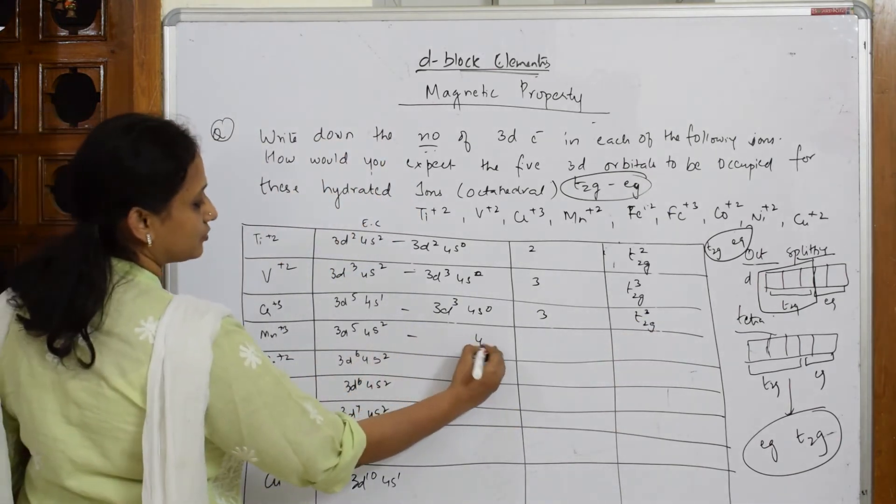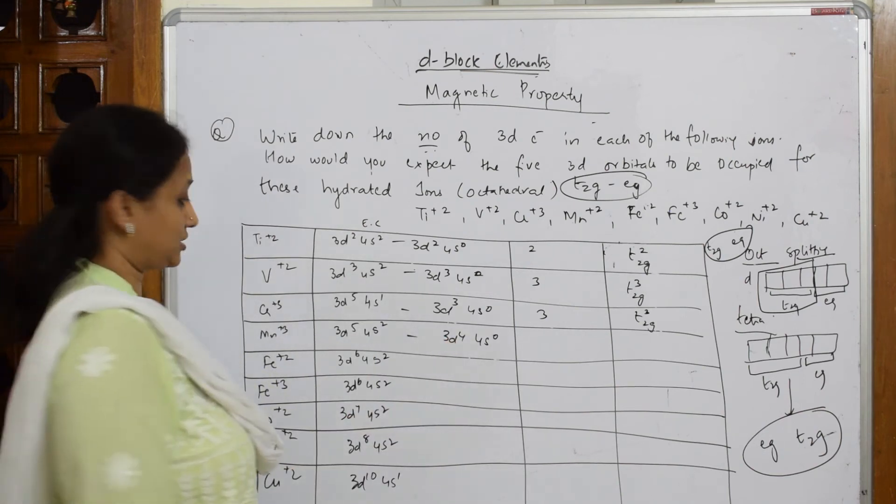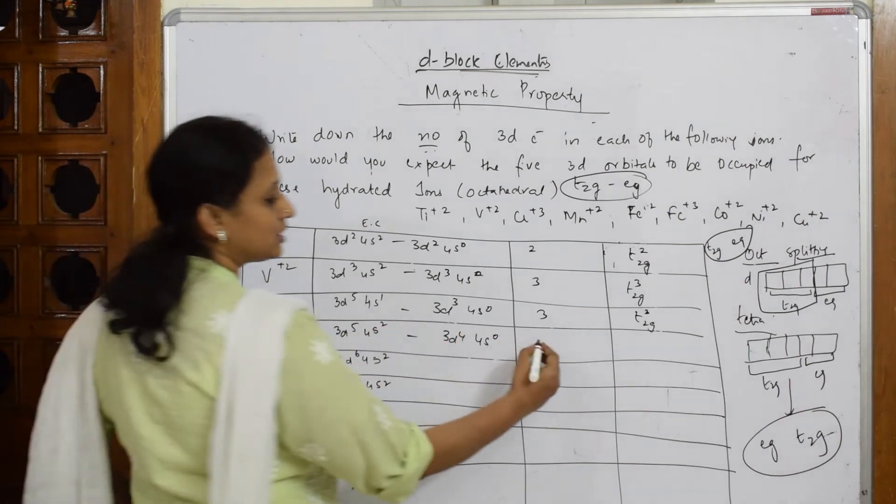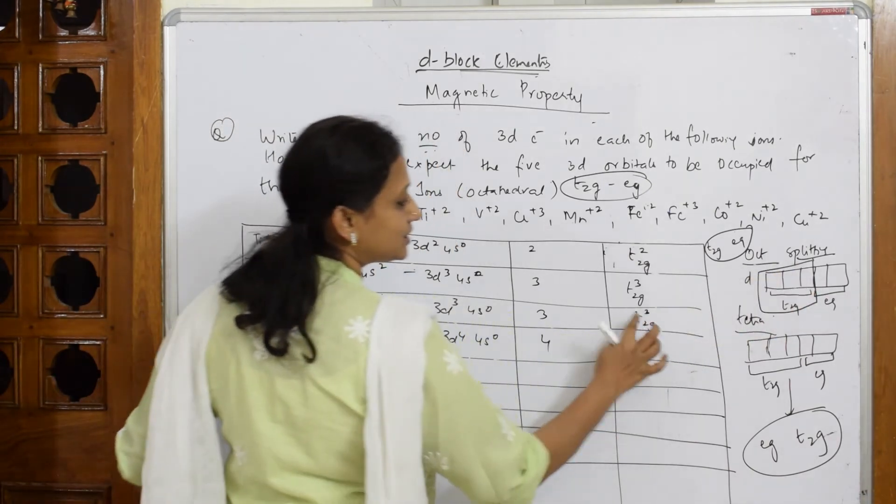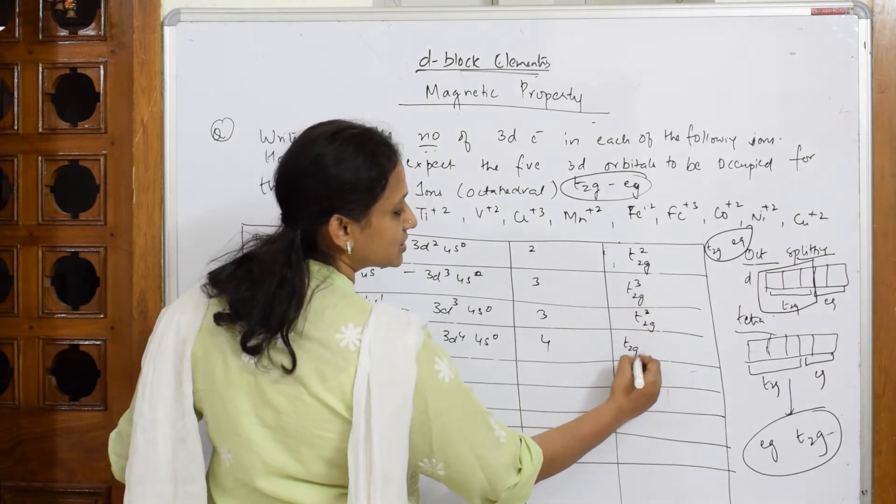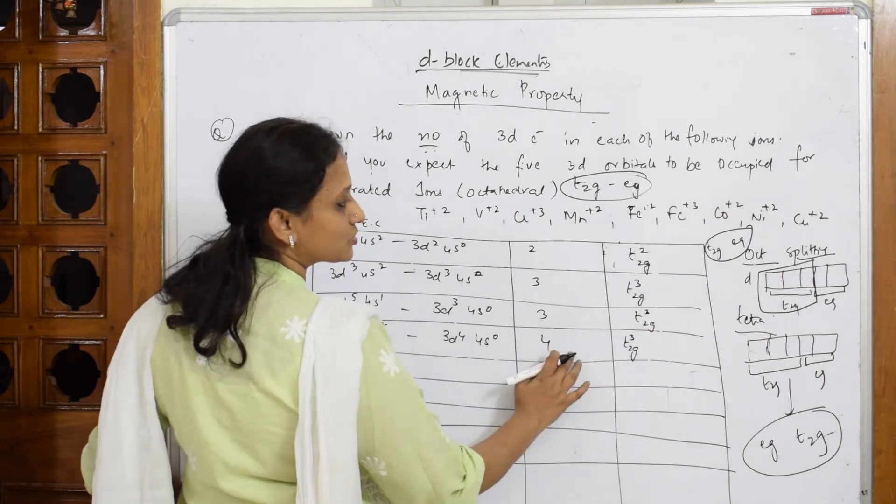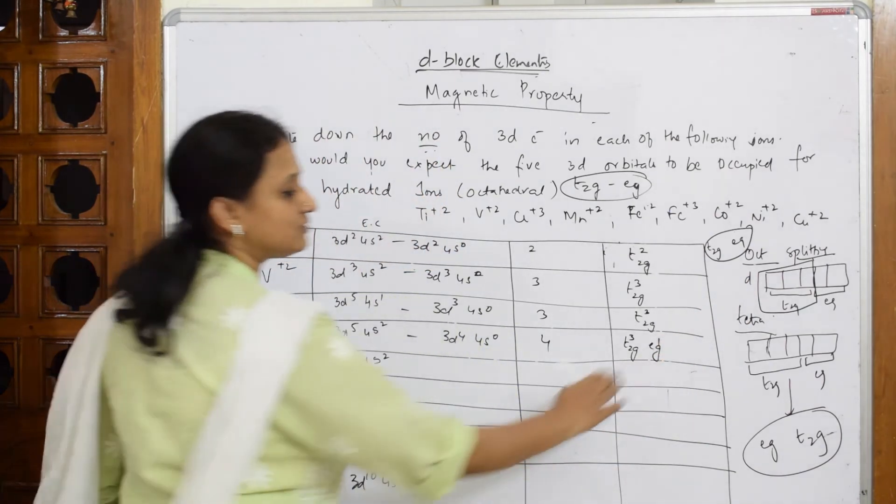Mn plus 3. 4S⁰. 3D⁴. Now, it has become 4 electrons because 1 from here, 2 from here. 4. How will you write? T2G already 3 electrons are filled, isn't it? Half filled. Don't start filling it please. So T2G is 3 electrons. 1 electron will go to the EG set now. EG¹.